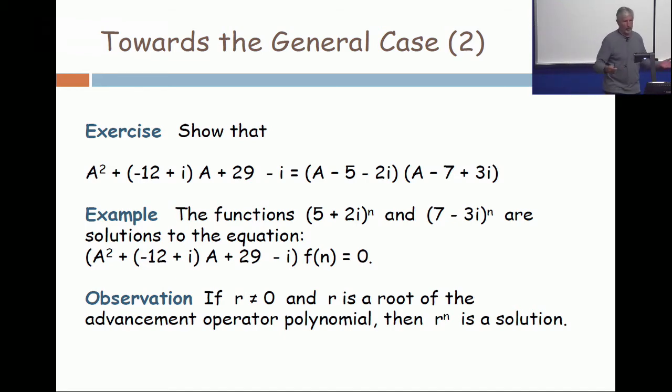All right. So why not? Let's go ahead and multiply those two things out and see if my slide is correct. Multiply A minus 5 minus 2i times A minus 7 plus 3i. Come on. You did this in high school, so you can do it again. Multiply that out and see what you get.